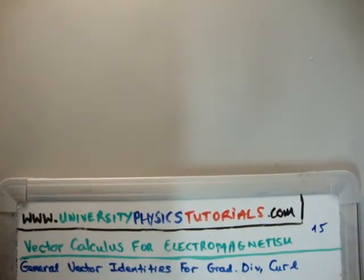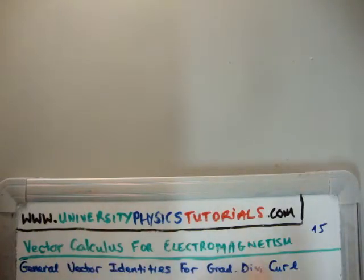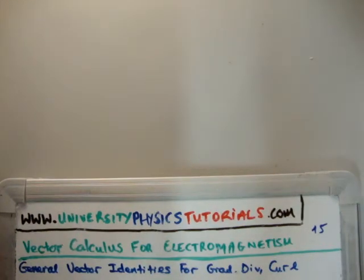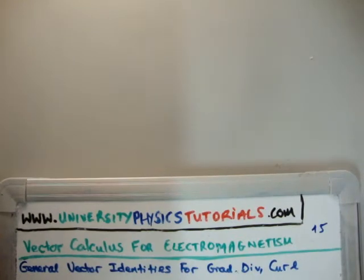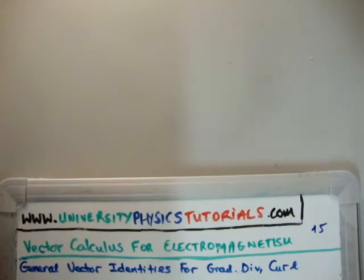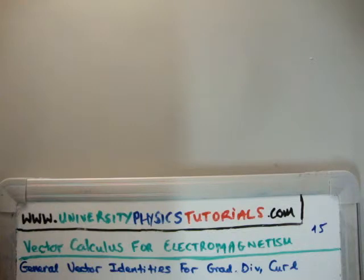In this video I'd like to continue on with my tutorials on vector calculus for electromagnetism. This is video number 15, and I'm going to discuss the general vector identities for grad, div, and curl. I'd like to draw your attention to my website, universityphysicstutorials.com. The content of this probably should be in a PDF, and I'm hoping to add this to my website as a PDF, but for the moment I'm going to leave it in video form.